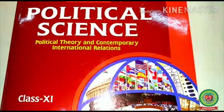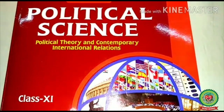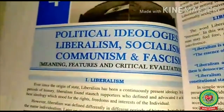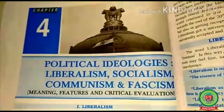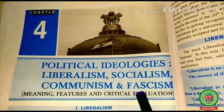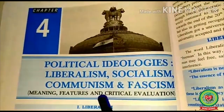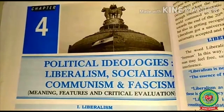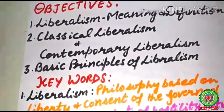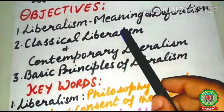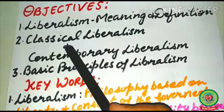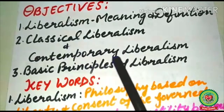Welcome to Class 11 Political Science. Today I will start Lesson 4: Political Ideologies. It has four ideologies: liberalism, socialism, communism, and fascism. The objectives of today's class are liberalism — its meaning and definition, classical liberalism, and contemporary liberalism.